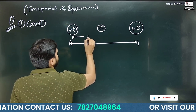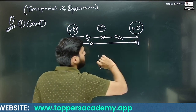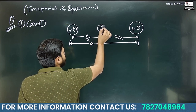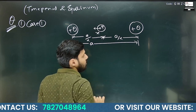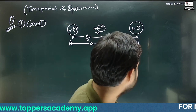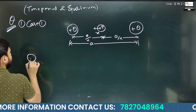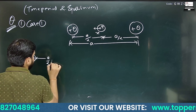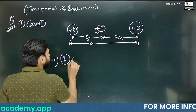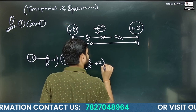Now let us suppose we have just displaced this small charge by a distance x, where x is very small. After the displacement, the distance from one charge becomes A/2 minus x, and the distance from the other charge becomes A/2 plus x.